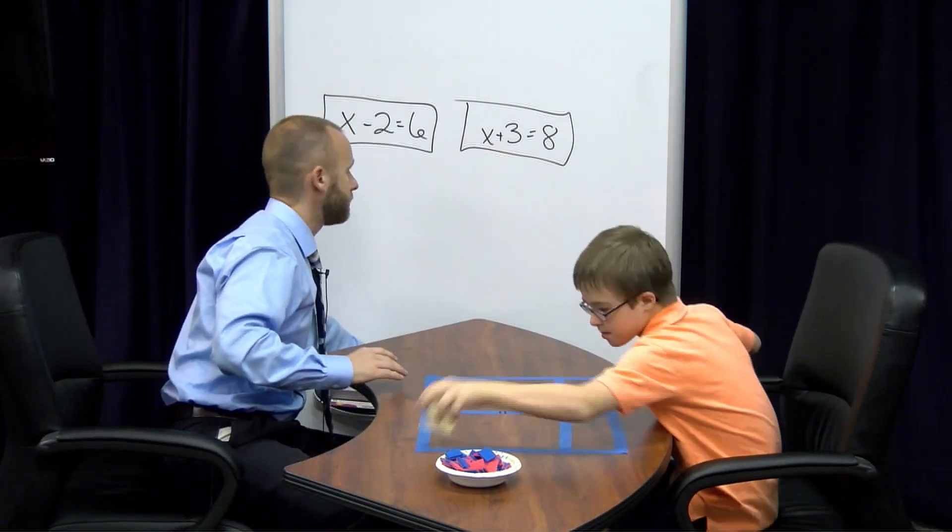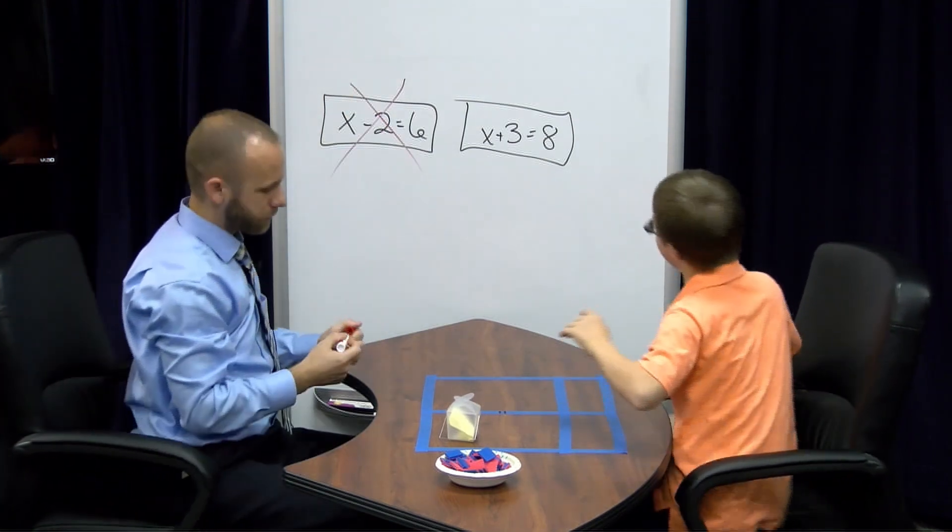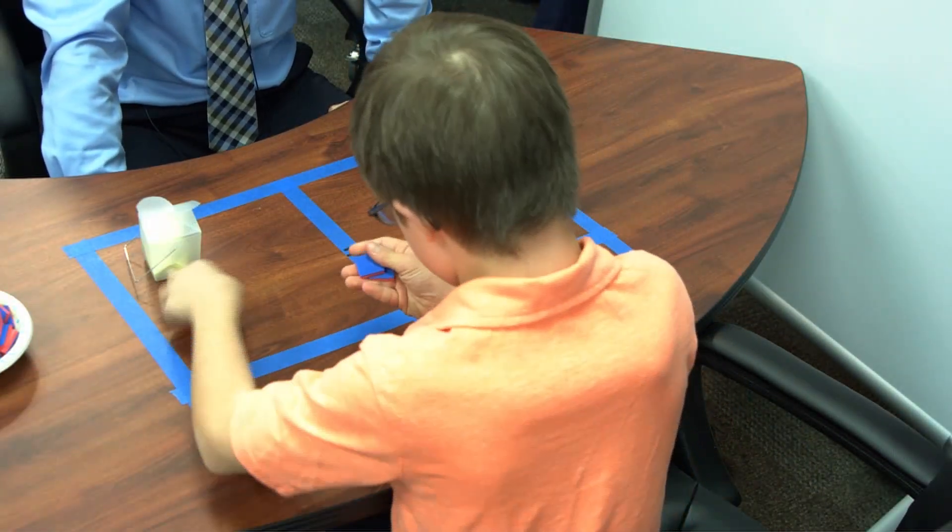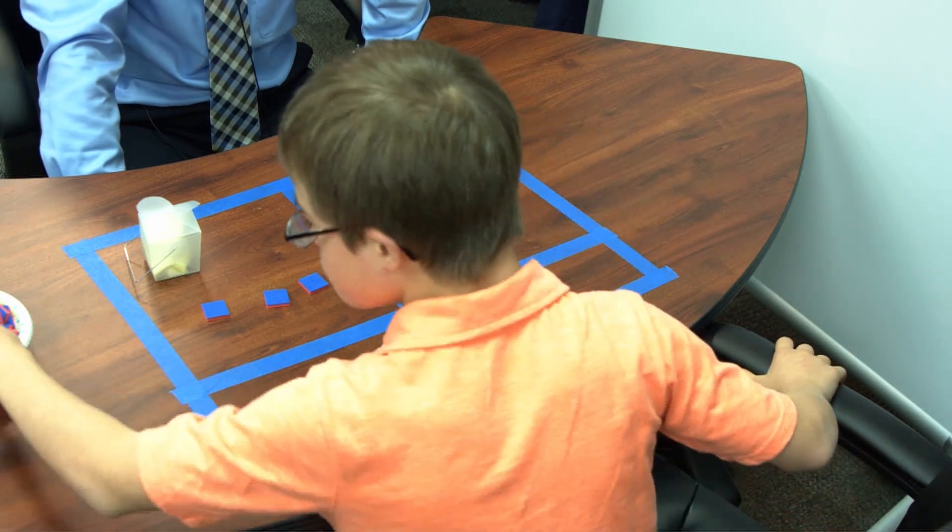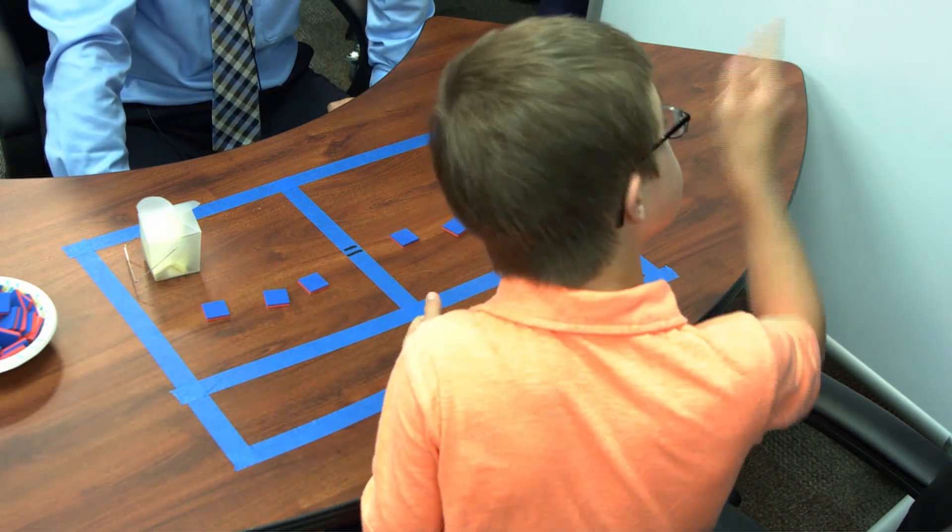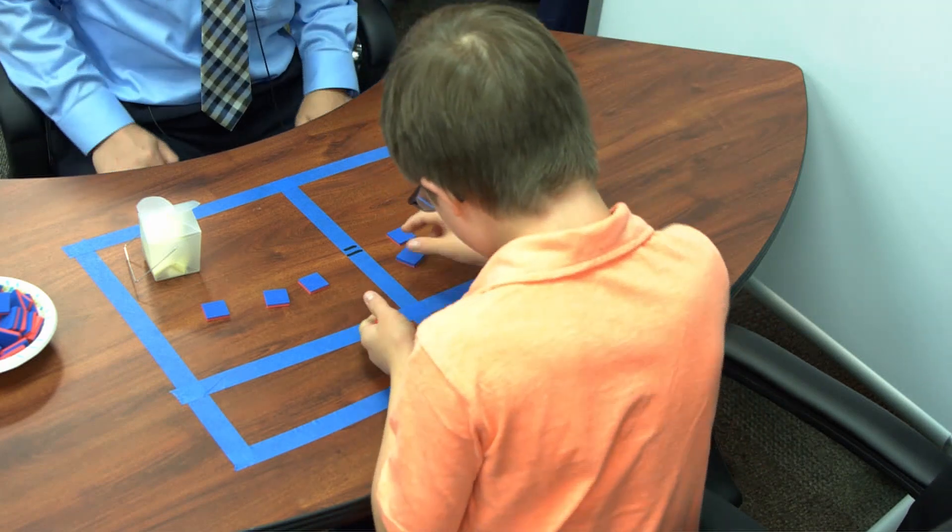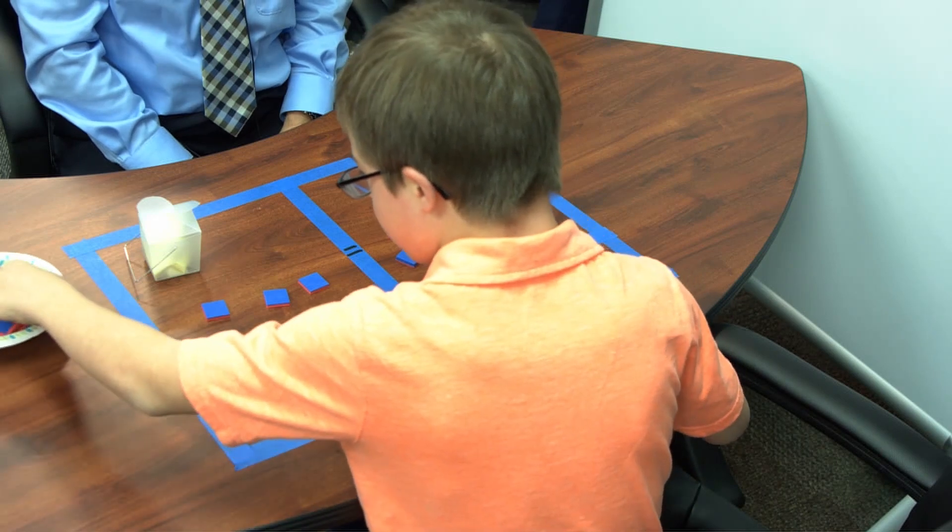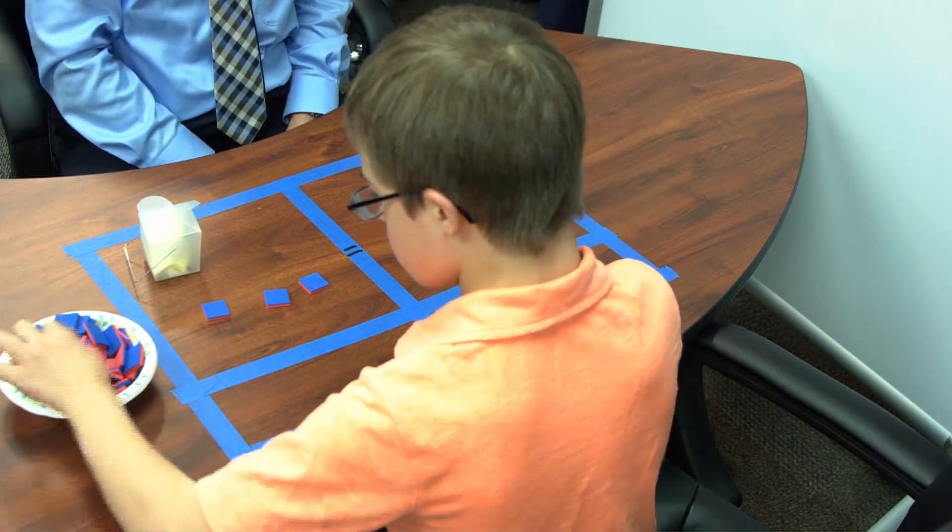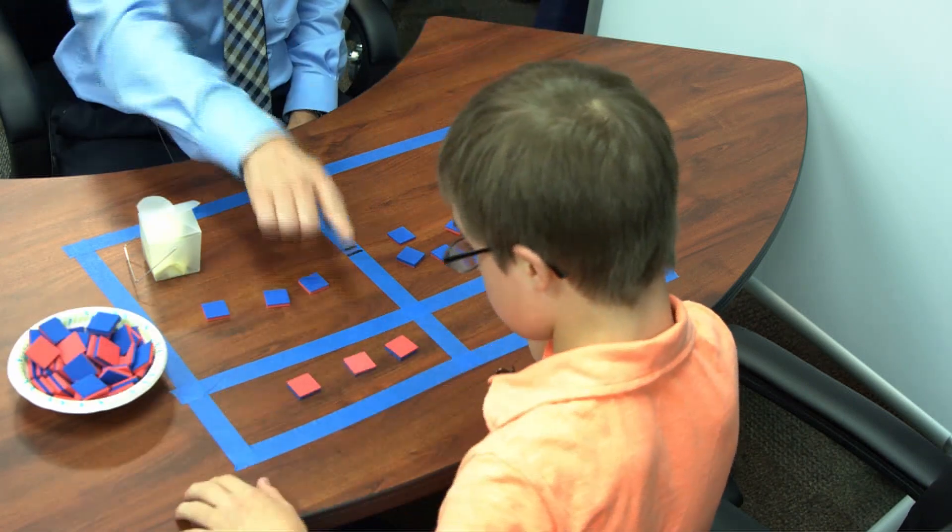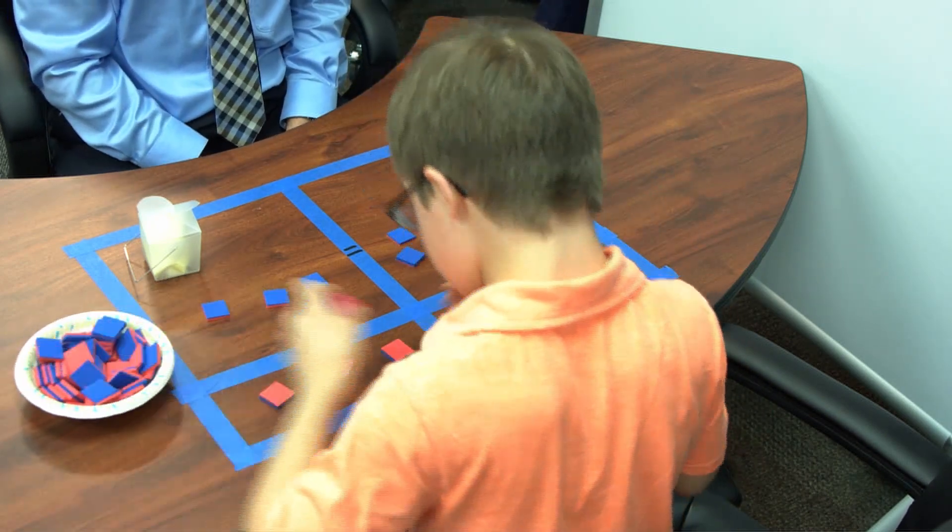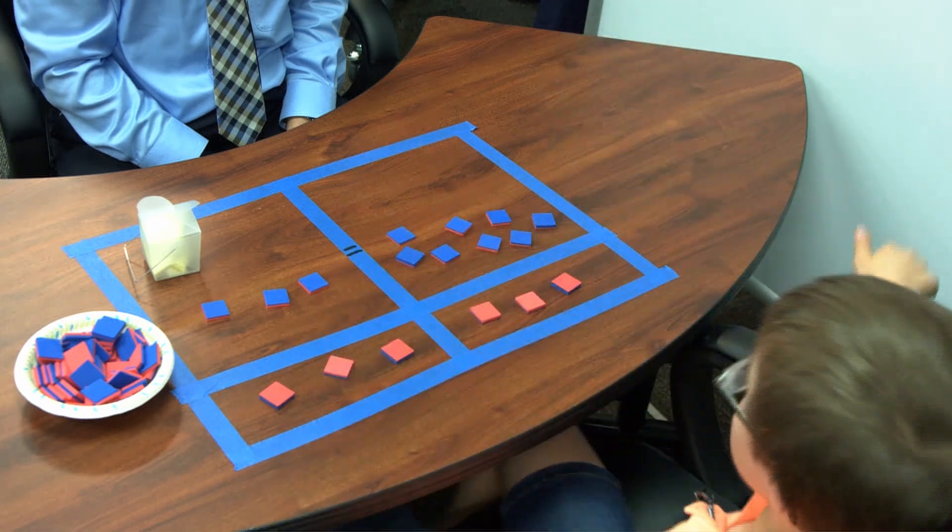This one had a 3, this one had an 8. So because you found $3 and then you knew you had $8, you picked the one with the 3 and the 8. How are you going to model solving this one? There's the X. And what goes with the X? How many are you going to put down over here?